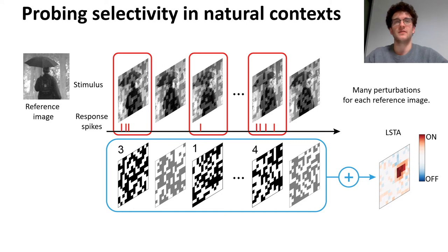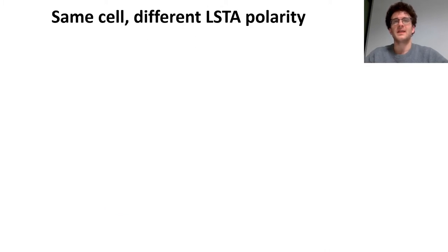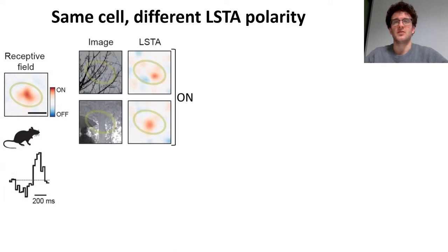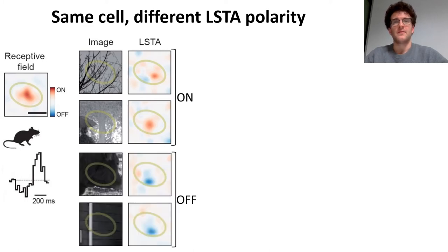Measuring these local STAs for a bunch of natural images, for some cells we found an interesting result. Let me give you an example. Let's take an ON mouse ganglion cell, ON in the sense that it has a positive STA. From the positive STA, we expect that the cell would be selective to an increase in the light levels inside its receptive field. But what we found instead is that the cell for some images has a positive local STA and so it does encode for a light increase, but the same cell for some other images has a negative local STA and so encodes for light decrease instead.